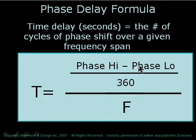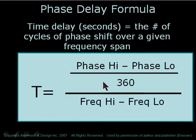So the top part of the formula translates phase shift into wavelengths, whereas the lower part, frequency, is going to give us a span of frequencies over which the phase shift occurs. So we have the range of phase change over the range of frequencies.